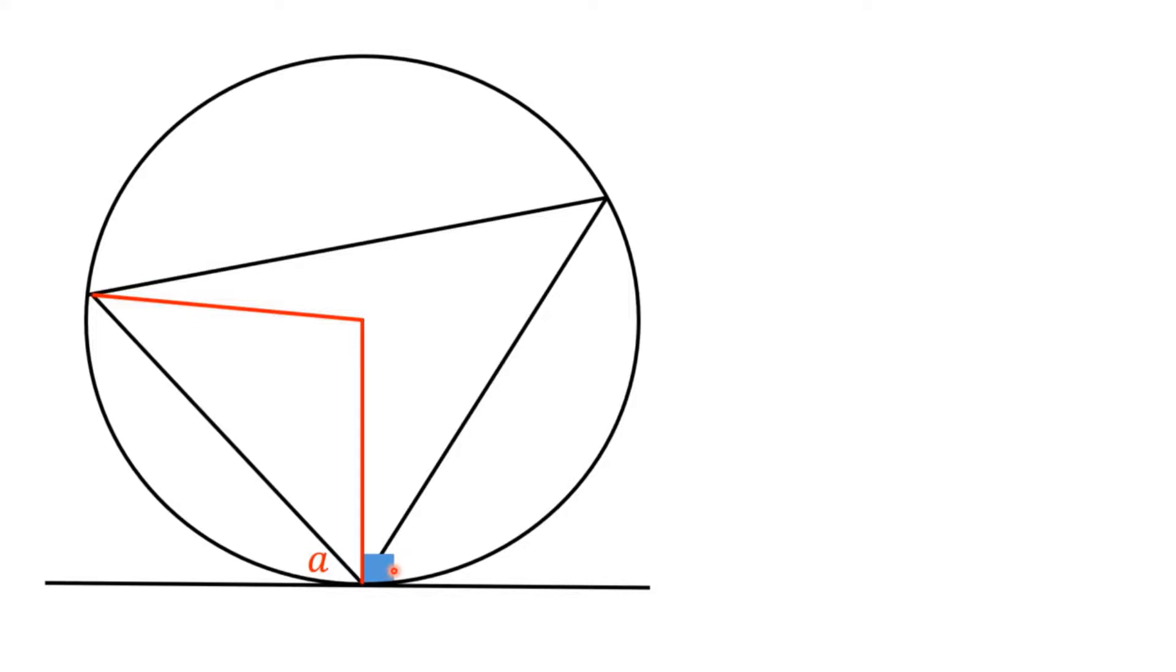Well, if the whole thing is 180 degrees, and this thing is a right angle, then that means that this little bit here, between the radius and this black chord, I must have 90 minus A, because this part here is A, and the whole thing is 90.